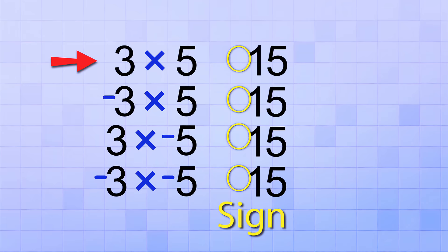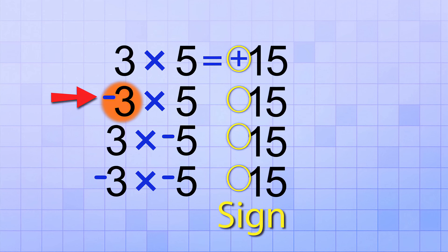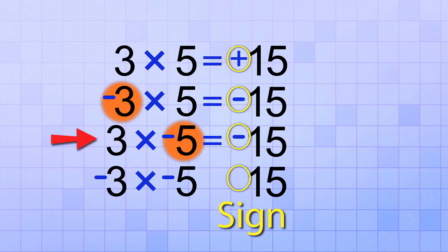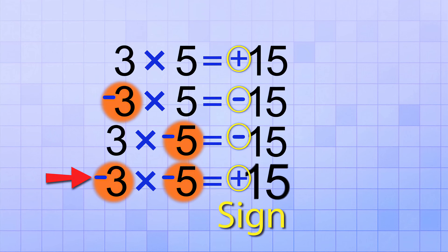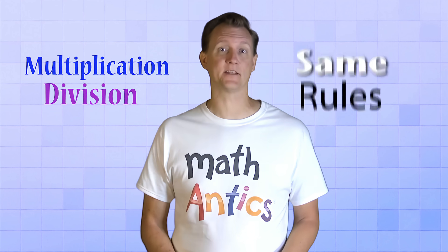In the first problem, 3 times 5, there are no negative factors, so the answer is positive 15. In the second problem, there's one negative factor, so the answer is negative 15. In the third problem, there's also just one negative factor, so the answer is also negative 15. In the fourth problem, negative 3 times negative 5, we have two negative factors — an even number — so they balance each other out and give us positive 15. The rules about negative factors are exactly the same for division problems, since multiplication and division are inverse operations.